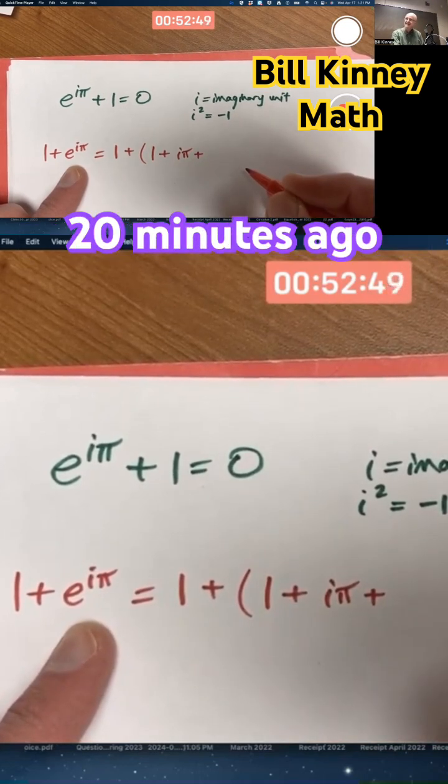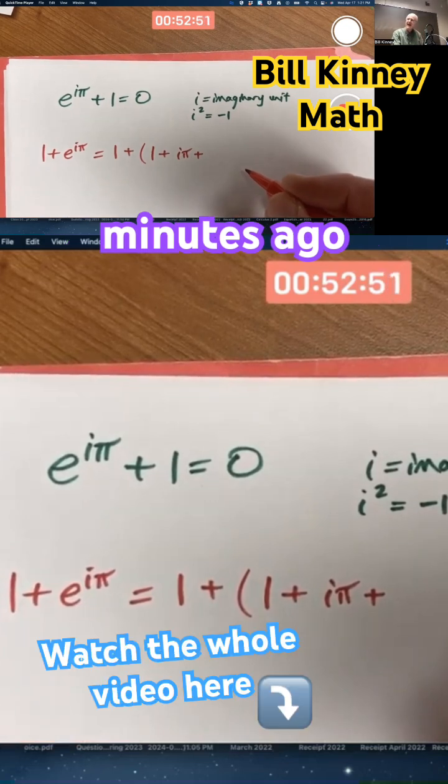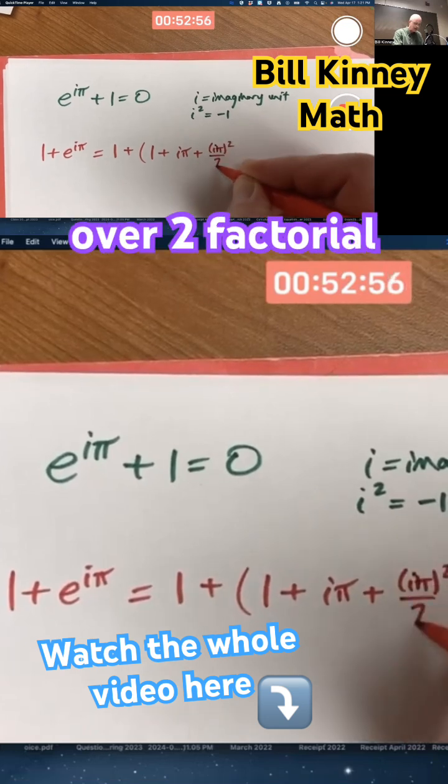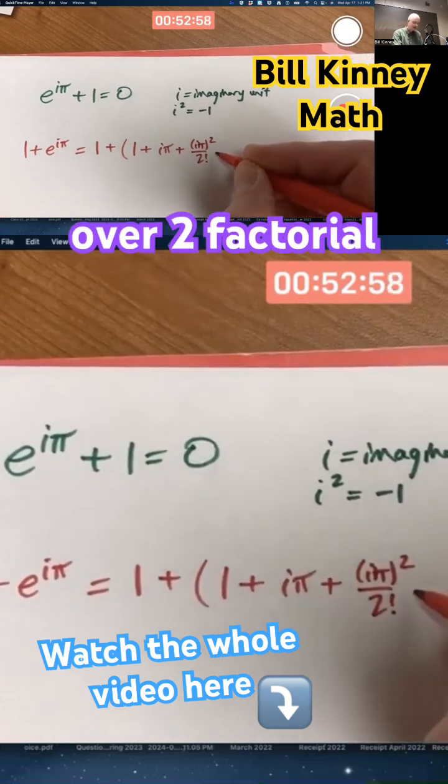Remember that from 20 minutes ago? 15 minutes ago? x squared over 2 factorial, i pi squared over 2 factorial, plus...